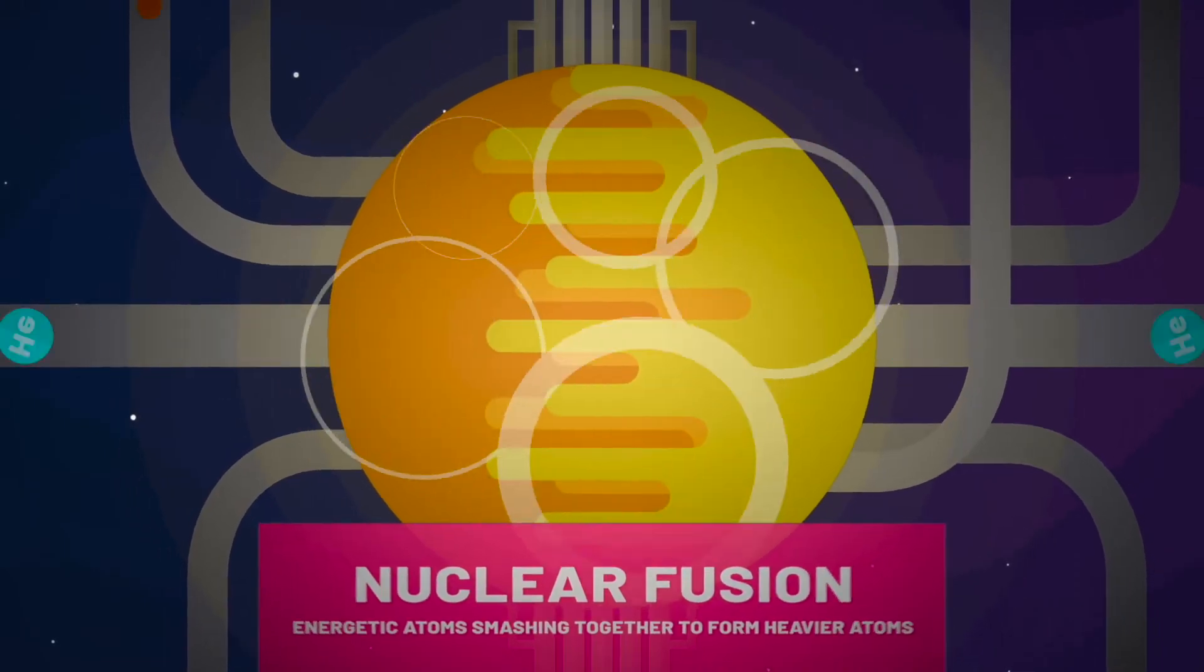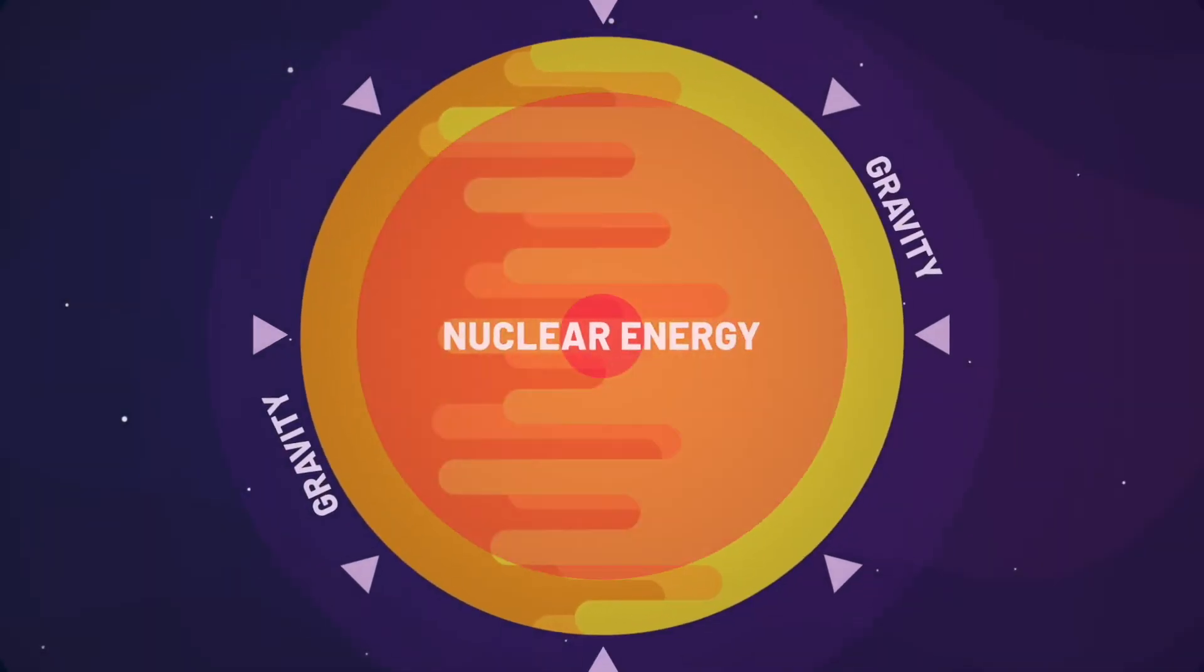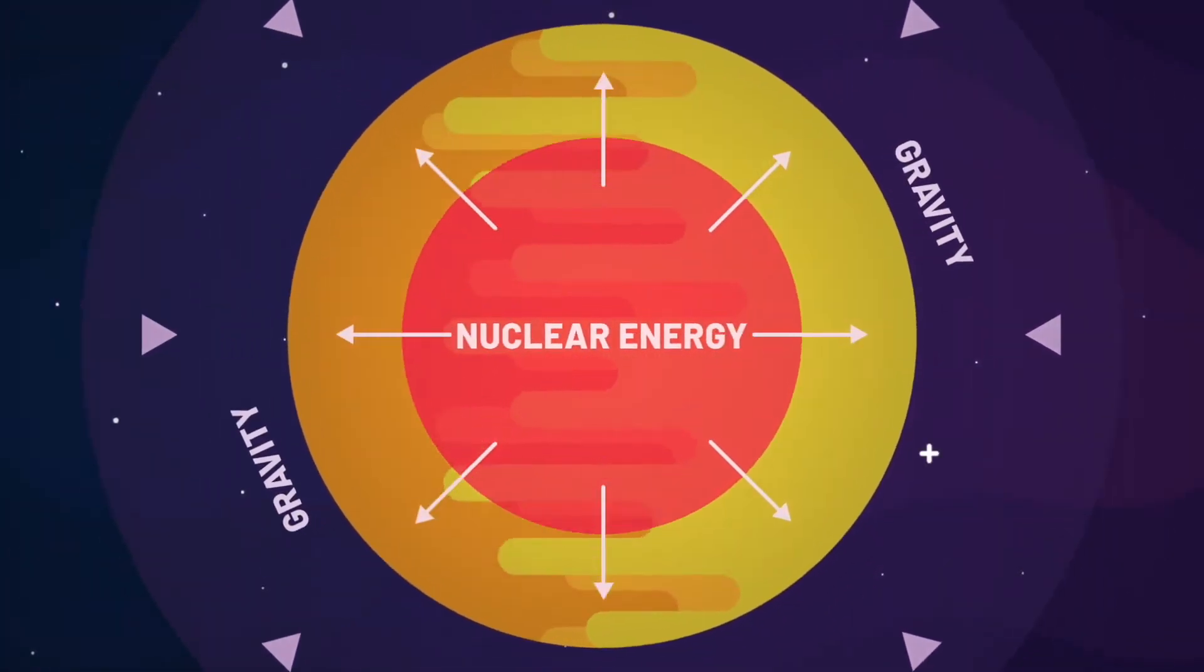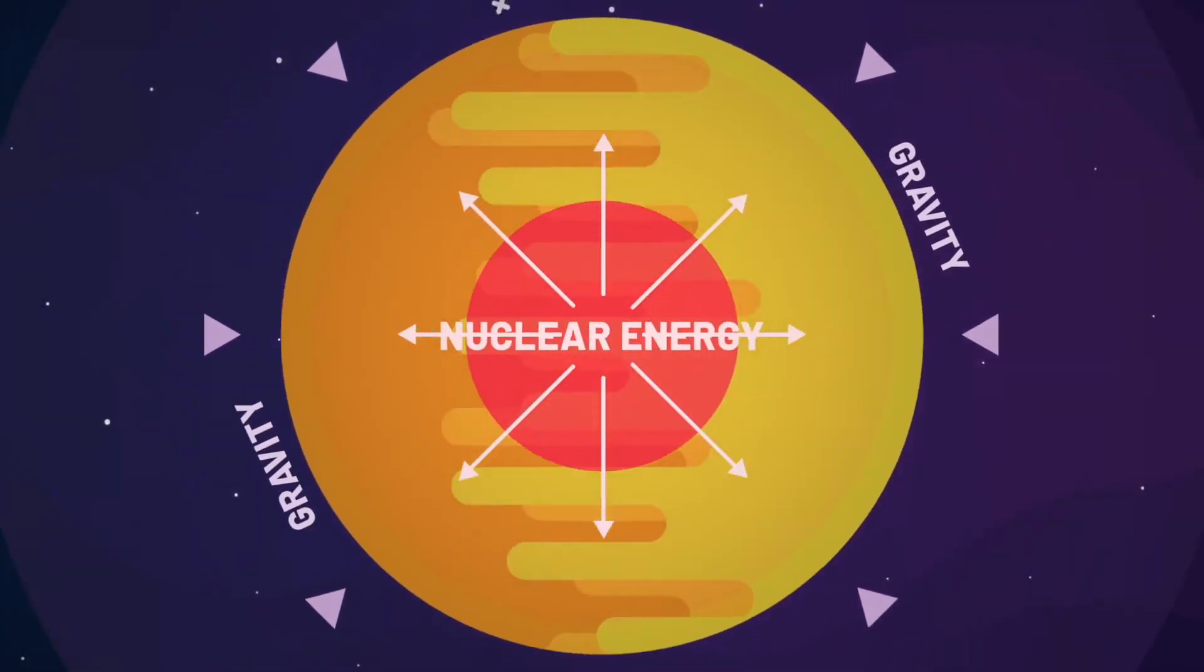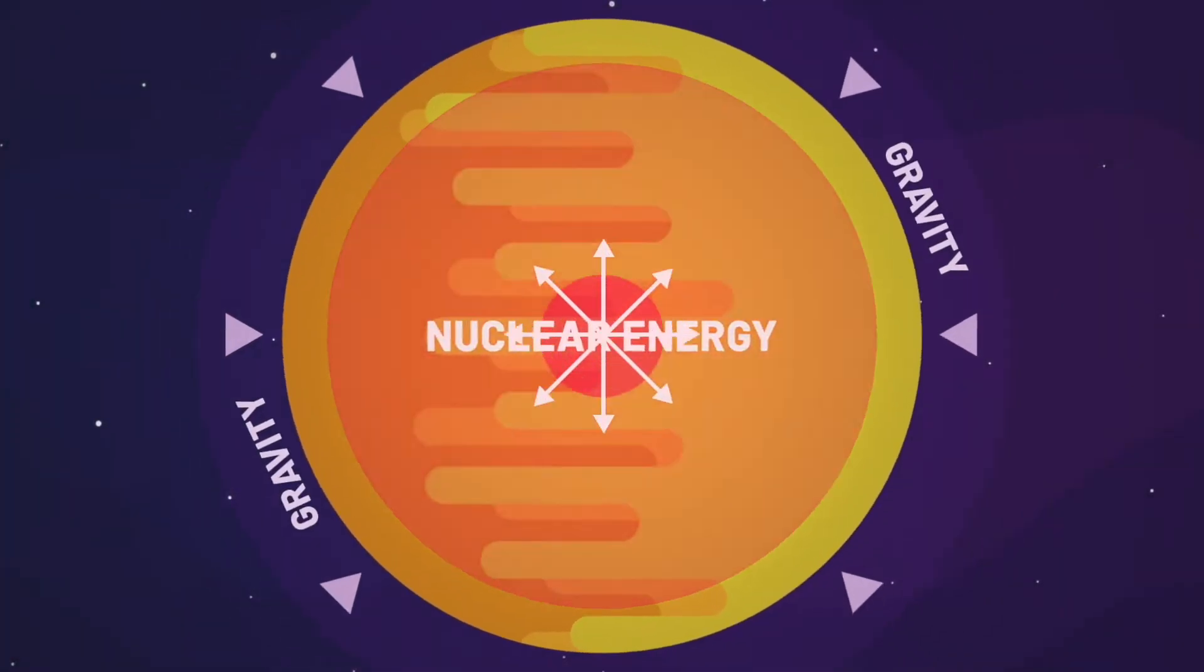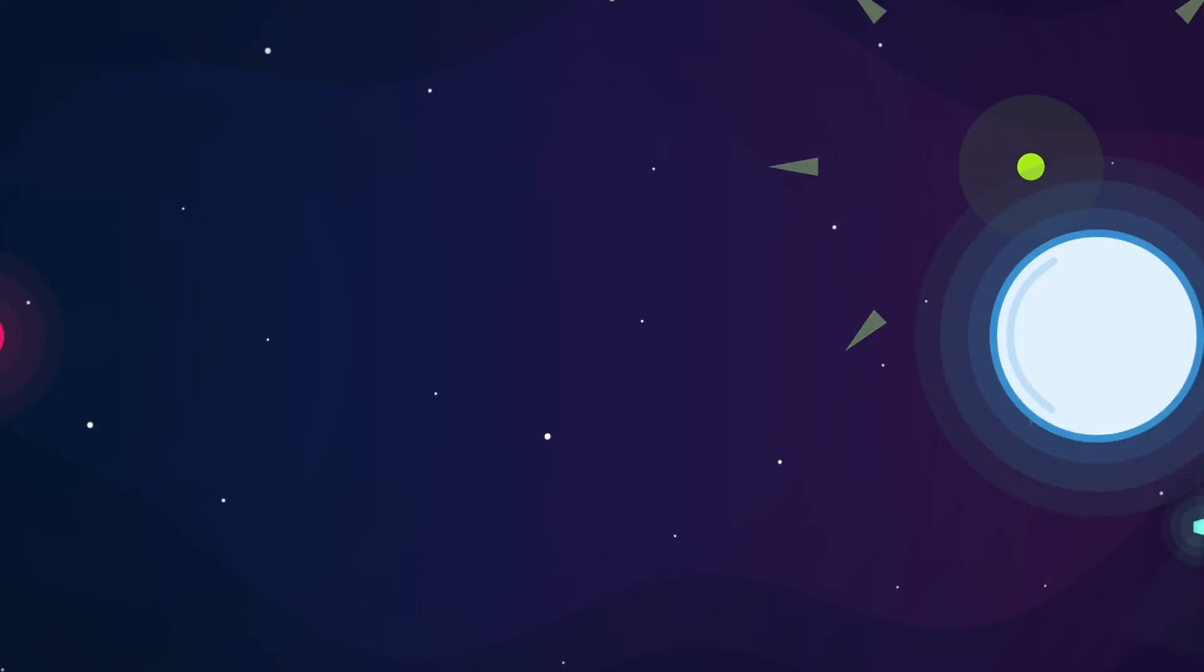And energy from this nuclear fuel pours outward from the sun's core, perfectly balancing the strong gravity constantly trying to crush the star. This is how stars operate.